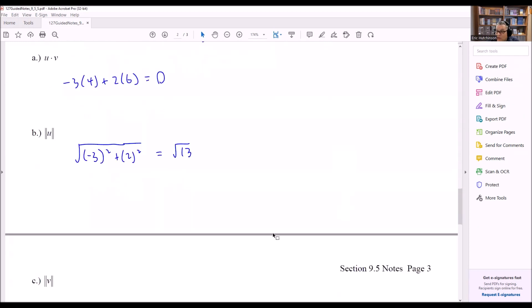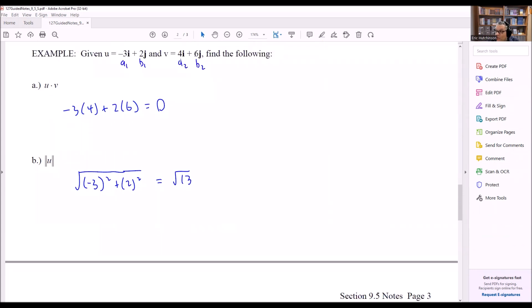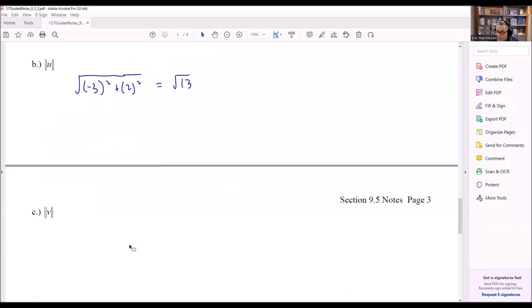Next one on the next page here is magnitude of v. Now v is 4 and a 6. So we're going to do this one a similar way we did the other one above. 4 squared plus 6 squared. And that's going to be the square root of 52, 16 plus 36.